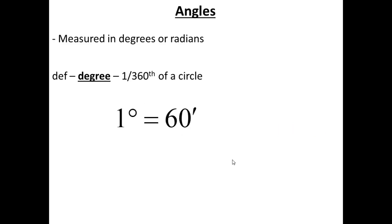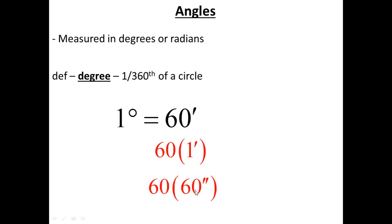If 1 degree is equal to 60 minutes, how many seconds are in a degree? For every minute there are 60 seconds, so 60 times 60 would be 3,600 seconds. Every degree includes 60 minutes, and every degree includes 3,600 seconds.